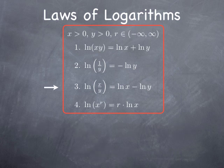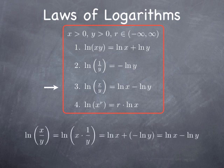As an immediate consequence, we get the third law: the natural log of a quotient is the difference of the logs, i.e., ln(x/y) equals ln(x) minus ln(y). This follows because ln(x/y) is the log of x times 1/y. By the first law, this is ln(x) plus ln(1/y), and by the second law ln(1/y) equals negative ln(y), giving us ln(x) minus ln(y).